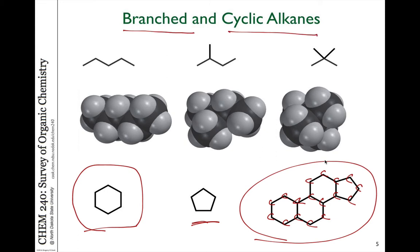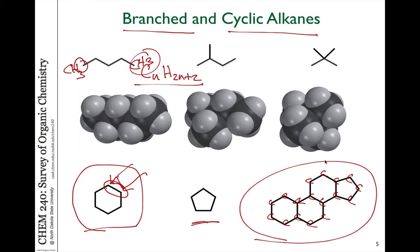For branched alkanes where no rings are formed, the general formula CnH2n+2 still holds regardless of branching. However, if you bring the ends together to make a ring, that requires the loss of two hydrogens — because if two ends of a chain each have three hydrogens and you form a new carbon-carbon bond between them, you must remove a hydrogen from each. So the general formula for a cyclic alkane is CnH2n.